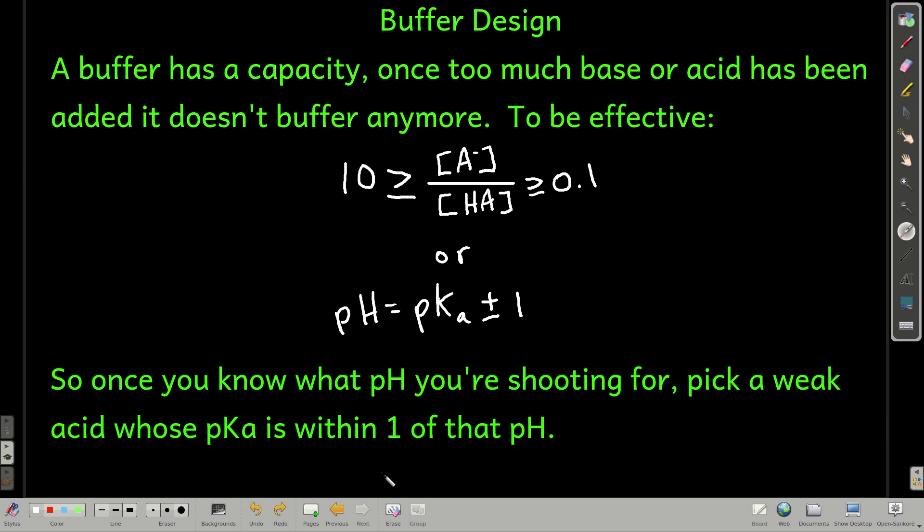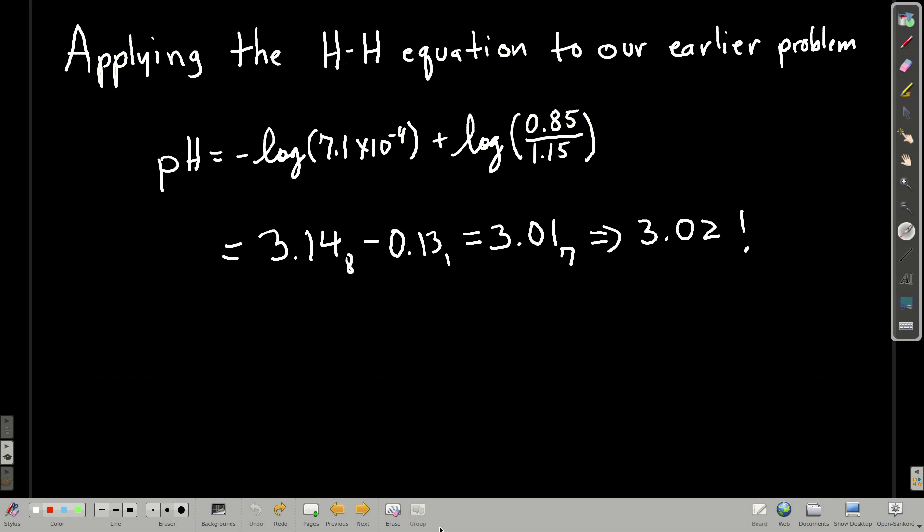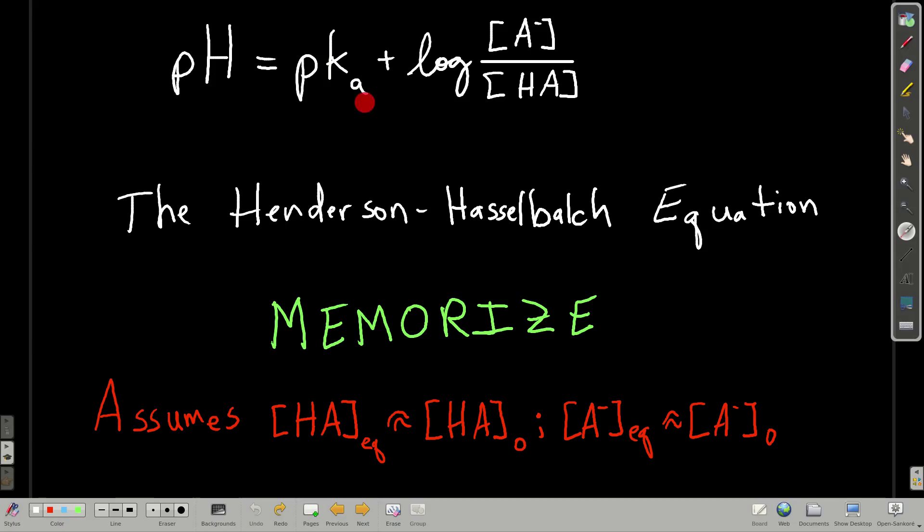Let's go back to the Henderson-Hasselbalch equation and look at one other really nice thing about this. When the concentration of the base is equal to the concentration of the acid, they're equal and this is 1, while log of 1 is 0 and pH is just equal to pKa.